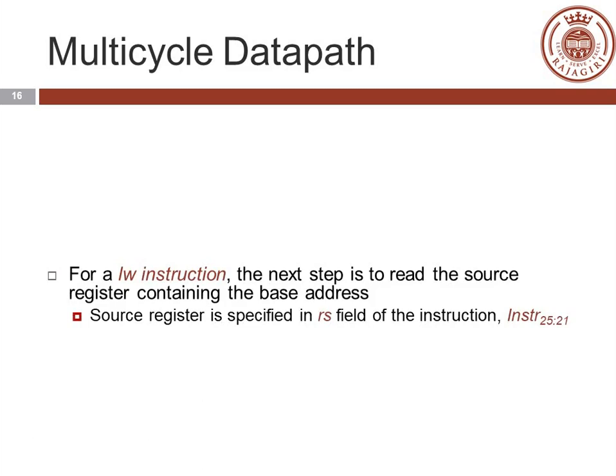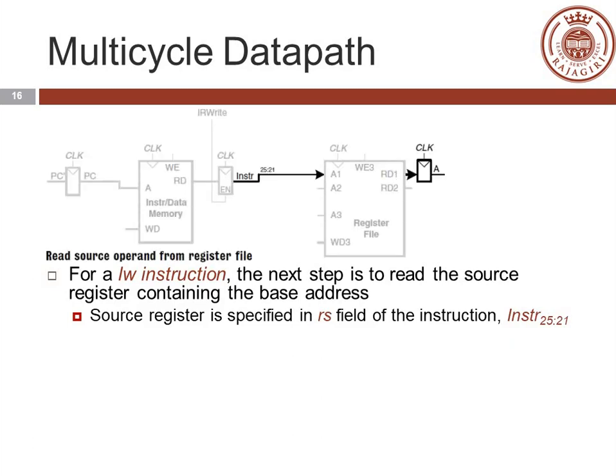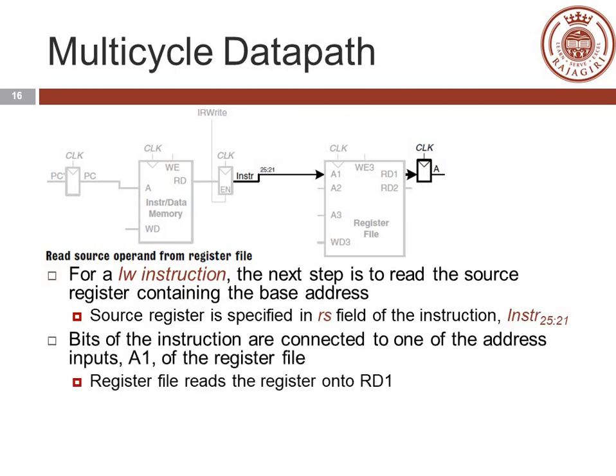For an LW instruction, the next step is to read the source register containing the base address. The source register is specified in the RS field of the instruction, that is bits 25 to 21. We extract those bits and feed them to the register file. The RS content is taken from read port 1, and the value is stored to a non-architectural register A.